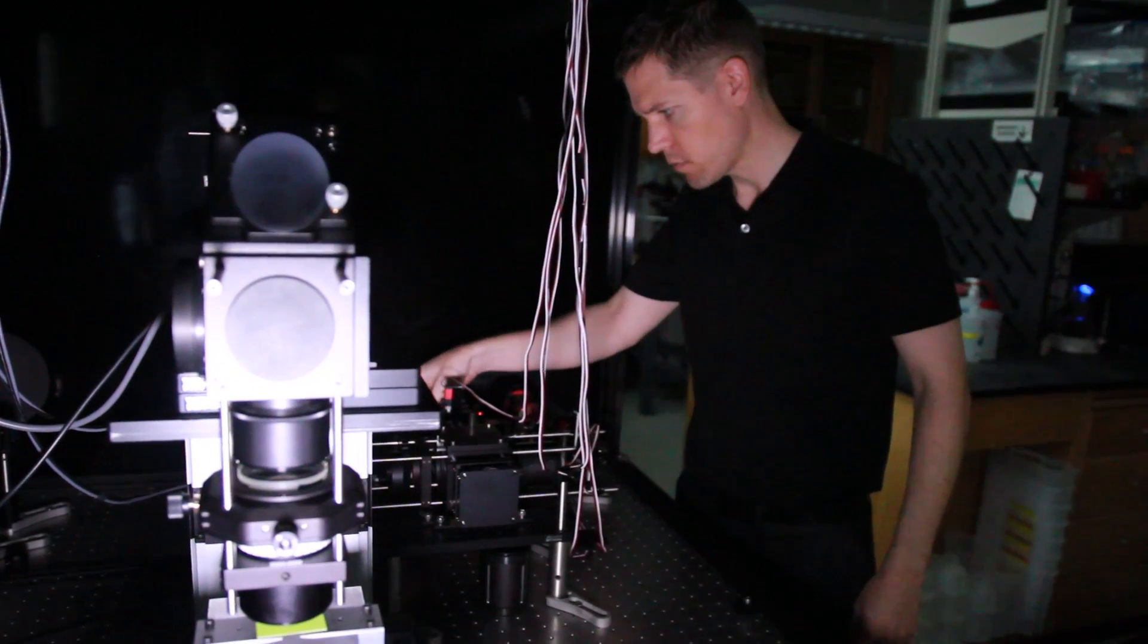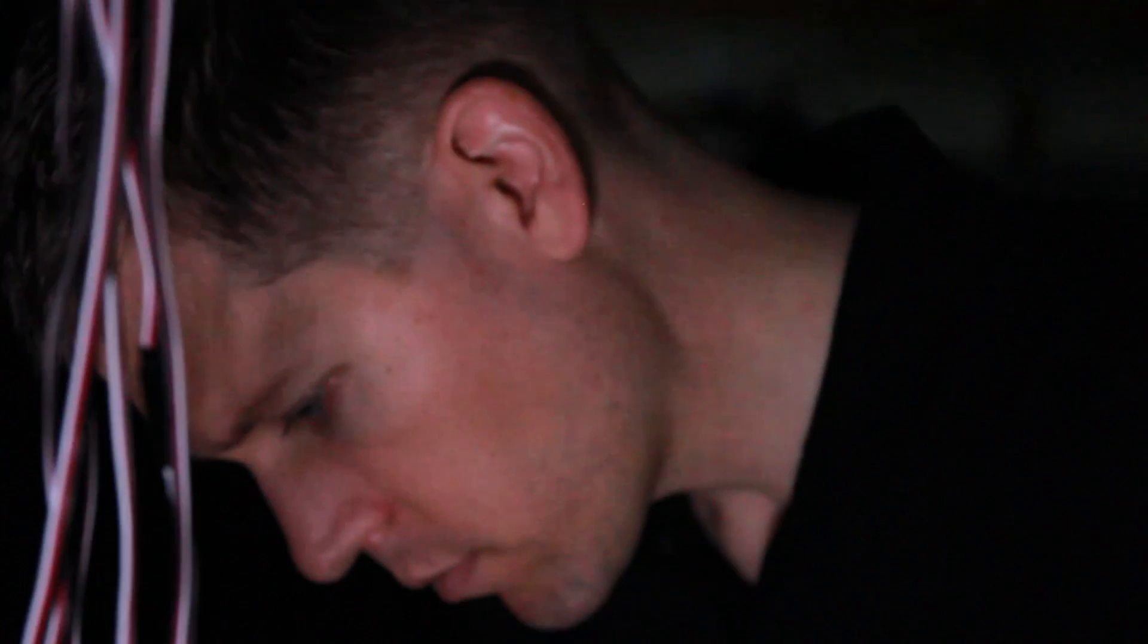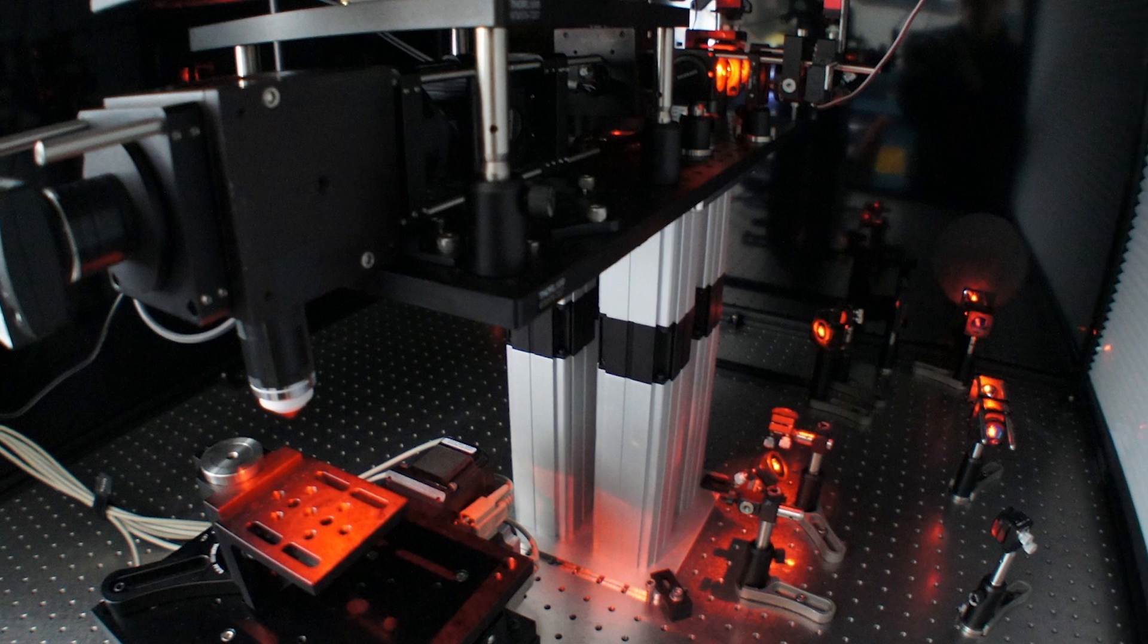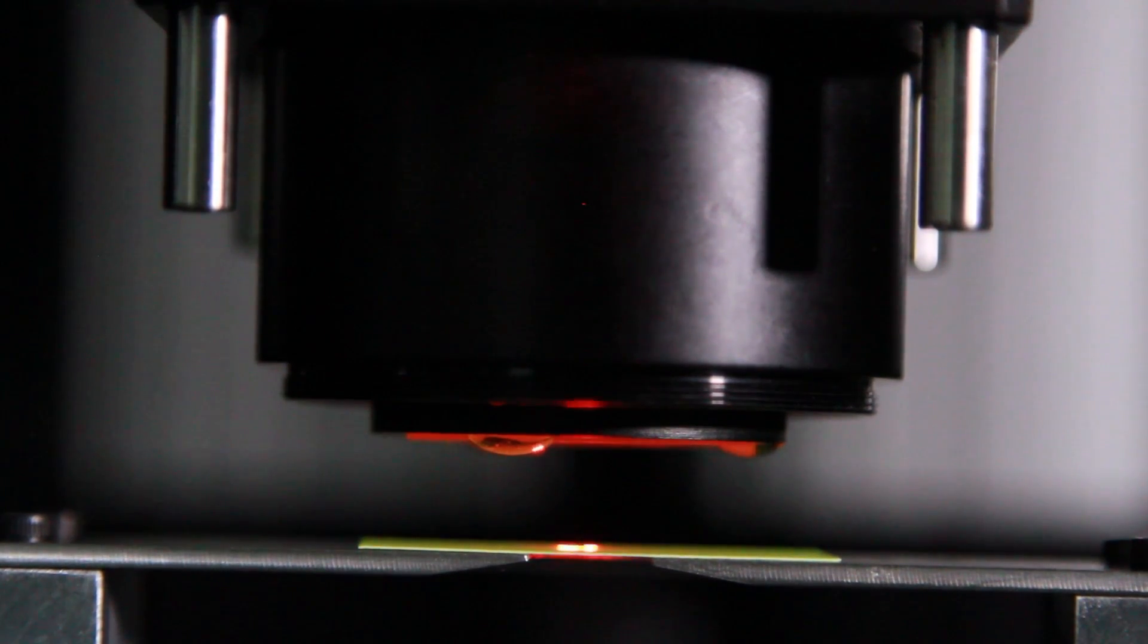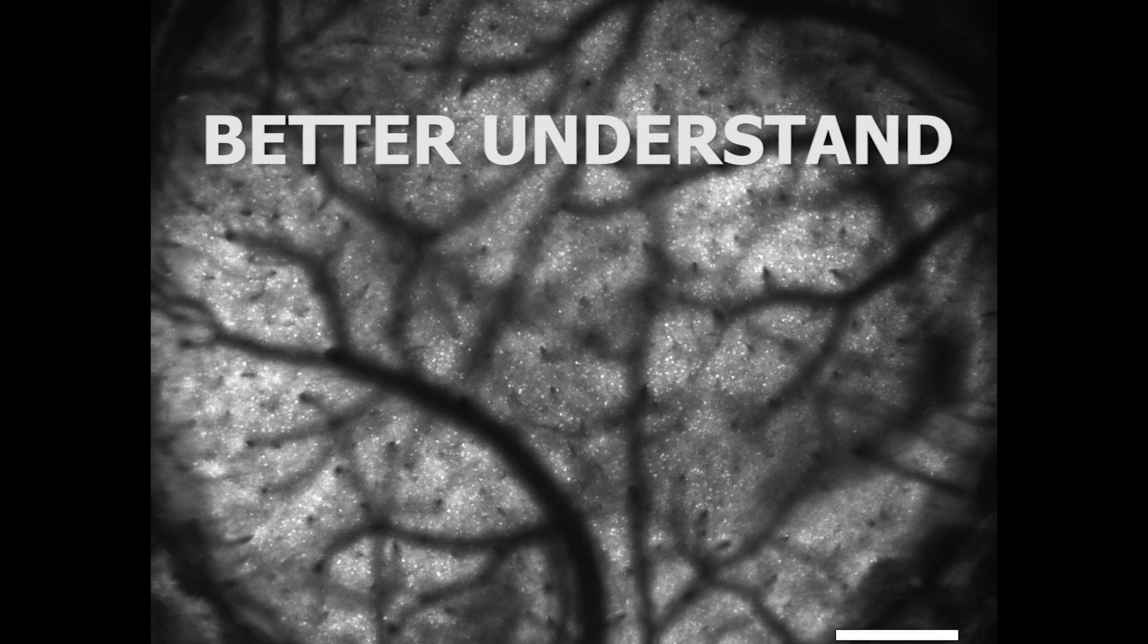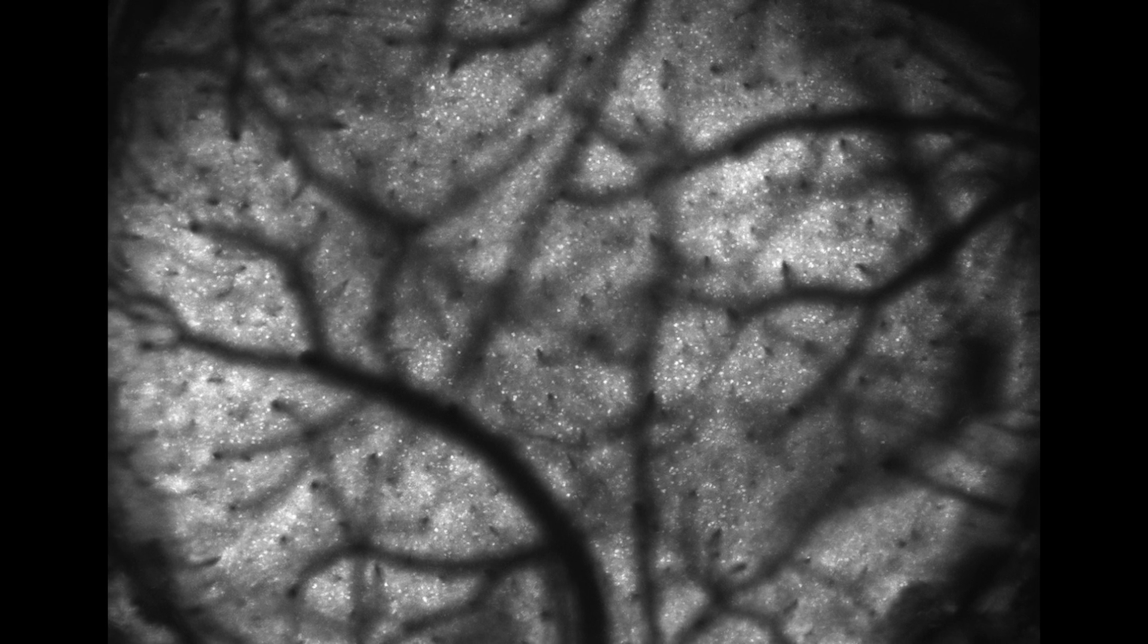If you just listen to one side of a telephone conversation, you really miss that dynamic exchange of information between those two parties. By imaging these two areas simultaneously, we can actually finally hear the entire conversation, both sides of it, and better understand how information is transformed across different brain areas.